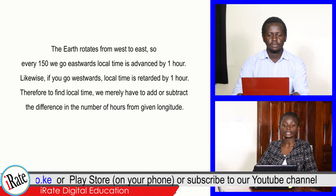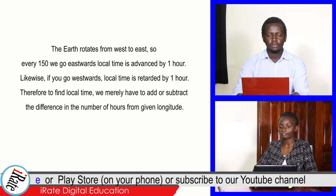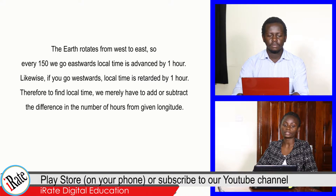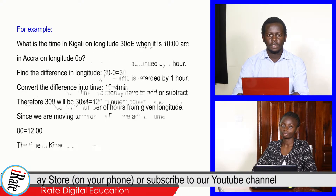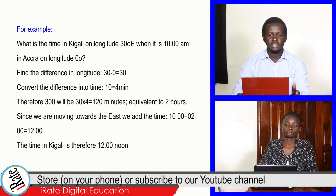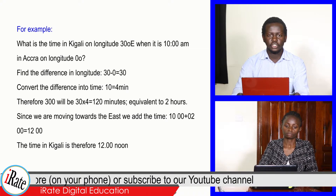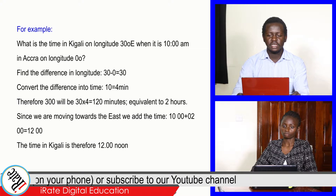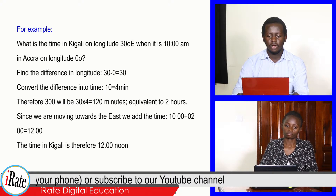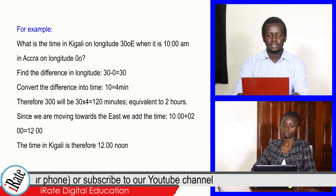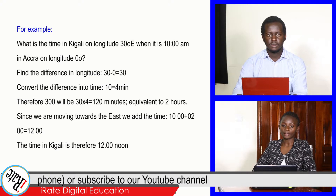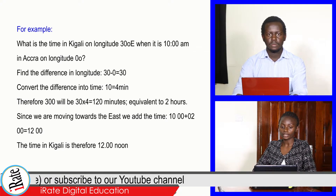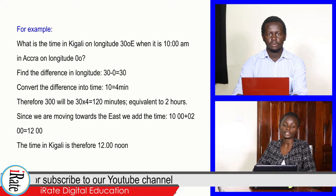Therefore, to find a local time, we merely have to add or subtract the difference in the number of hours from given longitudes. For example, what is the time in Kigali on longitude 30 degrees east when it is 10 a.m. in Accra on longitude zero degrees? Find the difference in longitude, which is 30 subtract zero, which is equal to 30.